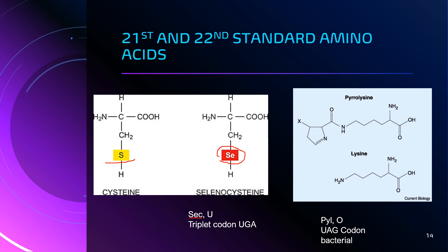Incorporation of selenocysteine into the protein during translation is carried out by the codon UGA. Interestingly, UGA is normally a stop codon that terminates protein synthesis, but here it also codes for the incorporation of selenocysteine into the protein structure. Another unique feature is that selenocysteine is enzymatically generated from serine directly on the tRNA — the selenocysteine tRNA — and then incorporated into proteins.